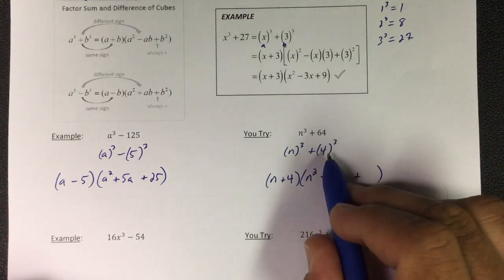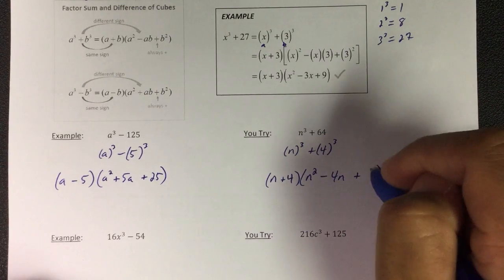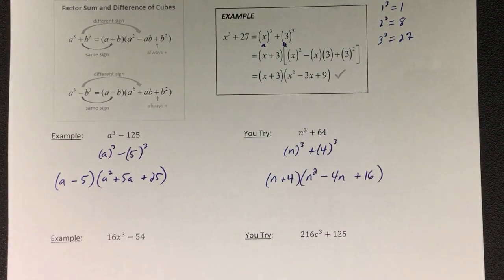4 squared is 16. Once you get these set up, it makes it a little easier.